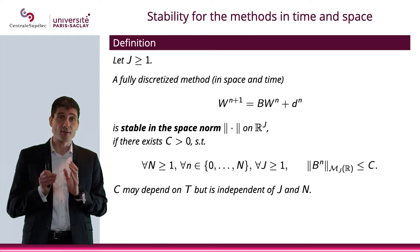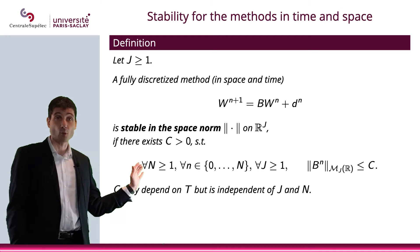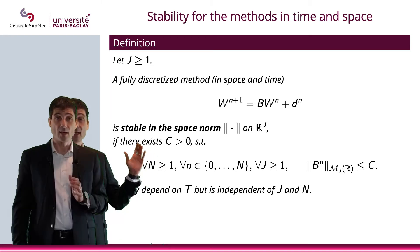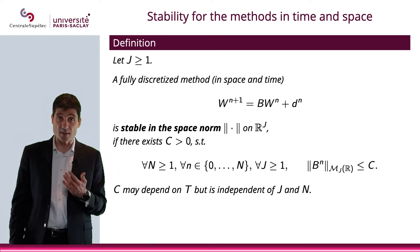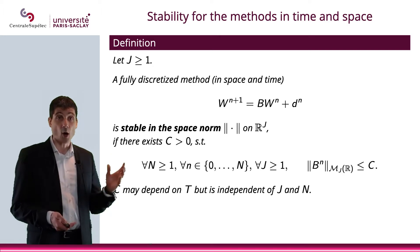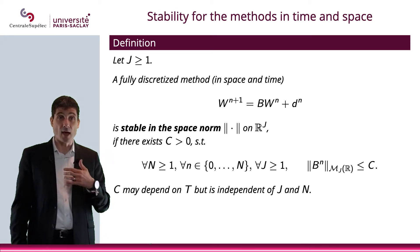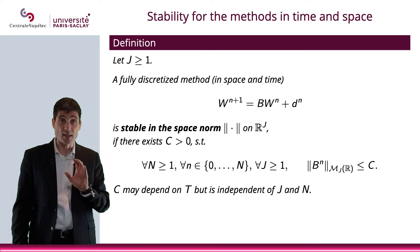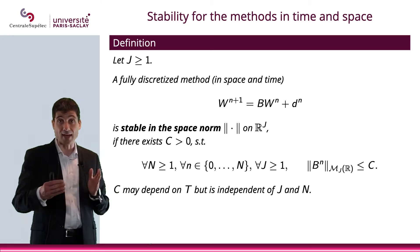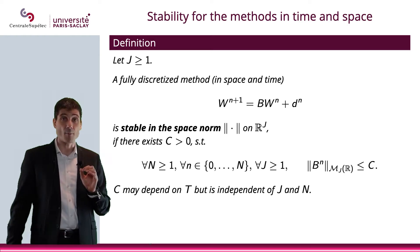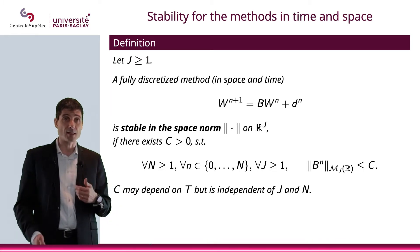Definition: we will say that a fully discretized method in space and time — that is w^{n+1} = B·w^n + d^n — is stable in the space norm on R^J if there exists a positive constant C such that the norm of B^n is smaller than C. This constant C may depend on T but must be independent of the discretization of the time domain. For a given T, C is indeed a constant.